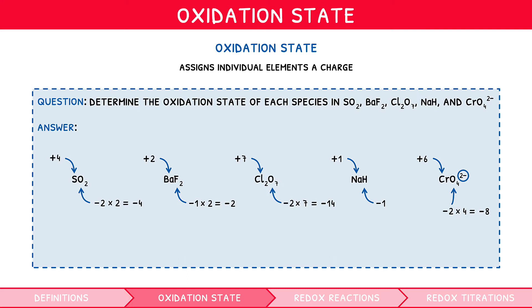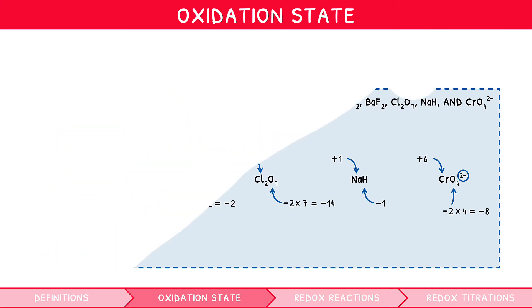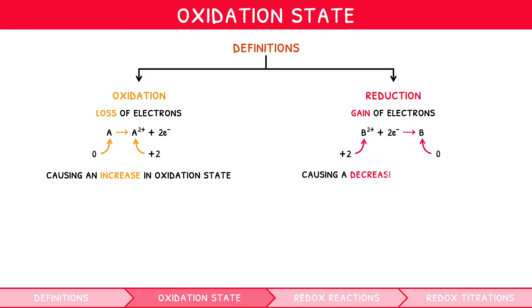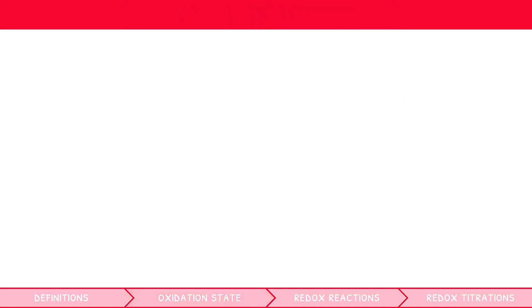Now that you understand oxidation states in full, we can revisit our definitions for oxidation and reduction to include it. Oxidation is the process by which a species undergoes a loss of electrons, causing an increase in oxidation state. Reduction is the process by which a species undergoes a gain of electrons, causing a decrease in oxidation state. You now understand the important terminology used in this topic — let's review the key reactions in which they are used: redox reactions.